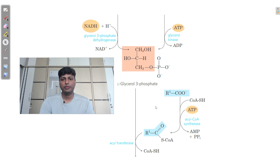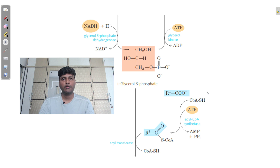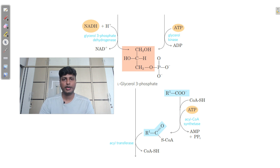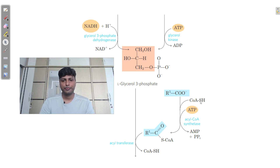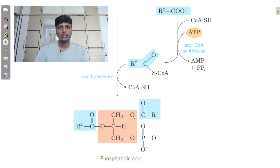Remember that for the attachment of a particular fatty acid there is a requirement of coenzyme A, because coenzyme A is a transporter molecule. These fatty acids are transported from the mitochondria into the cytoplasm — they cannot directly cross mitochondrial membranes, which is why they require coenzyme A as a transporter. First the fatty acid gets attached to coenzyme A, and once attached, it can then attach to glycerol-3-phosphate.